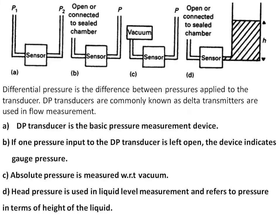Before discussing further, we will look at the different types of pressures. In figure A, differential pressure is represented as the difference between the pressures applied to the different ends of the sensor. DP transducers are commonly known as delta transmitters and are used in flow measurement. A DP transducer measures pressure with respect to some difference.